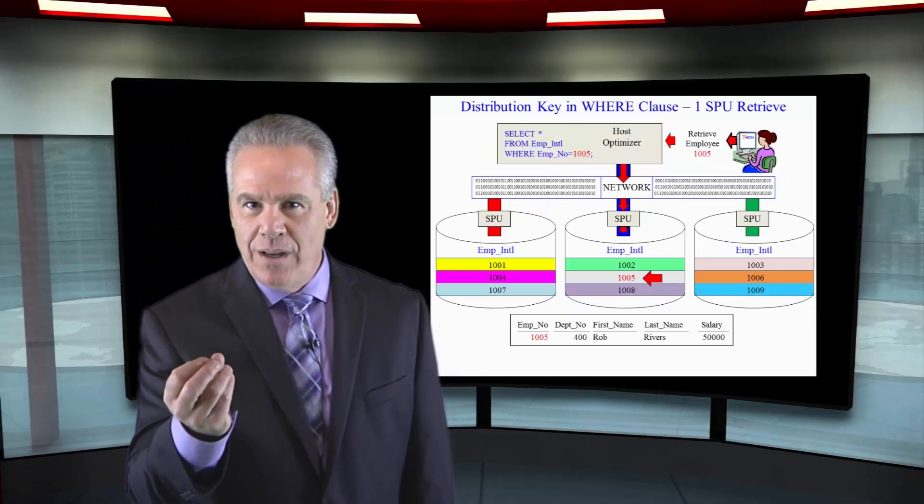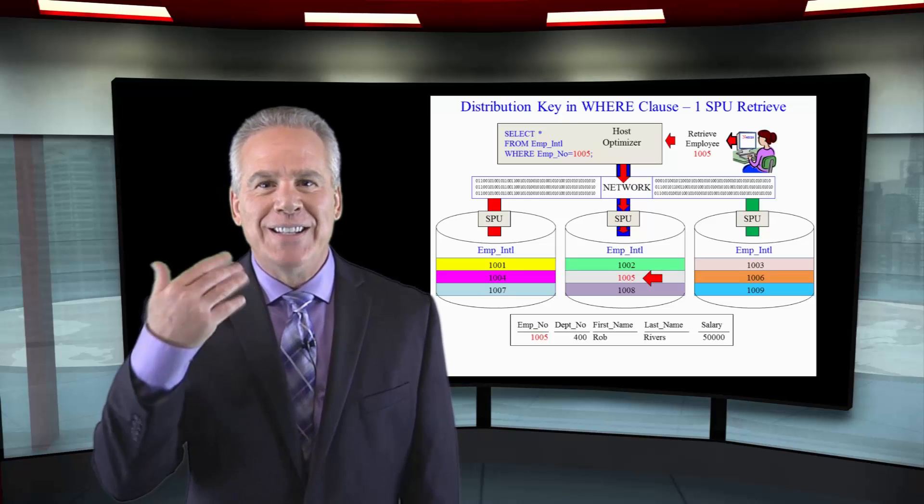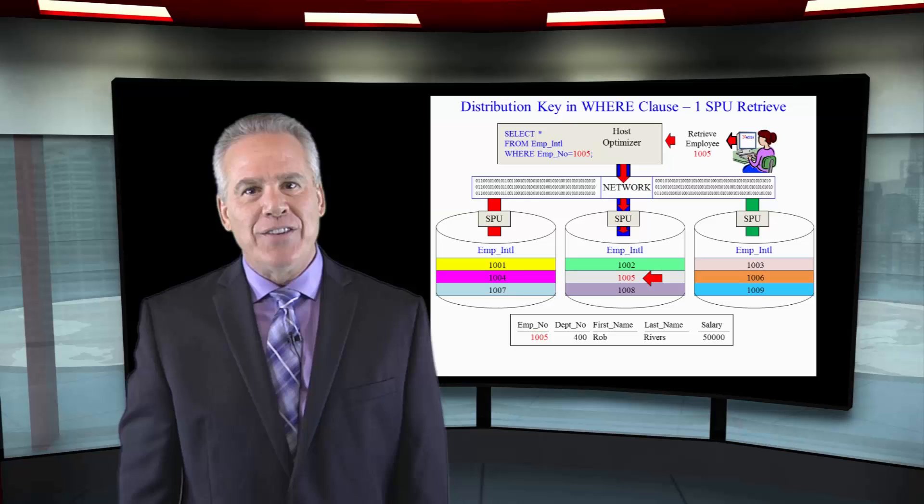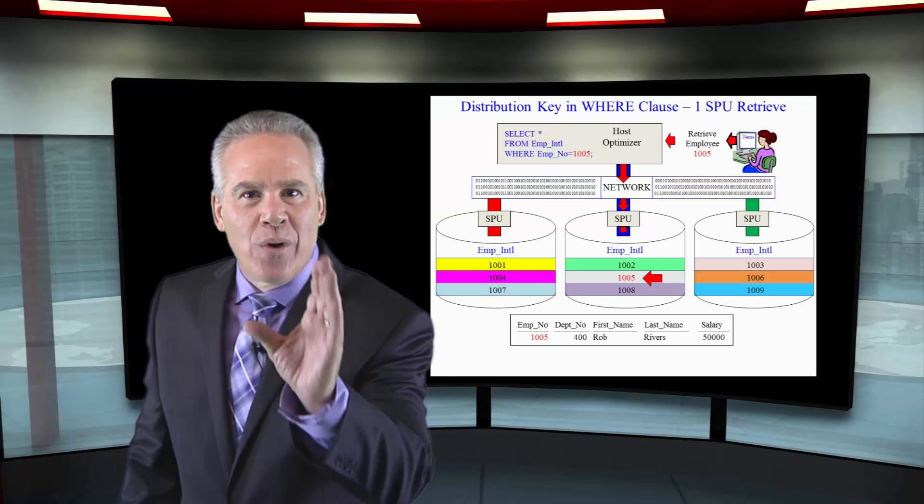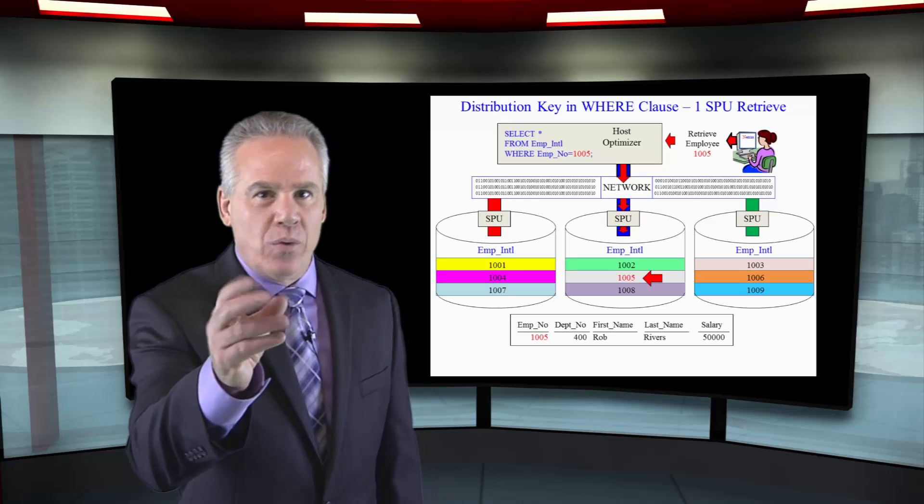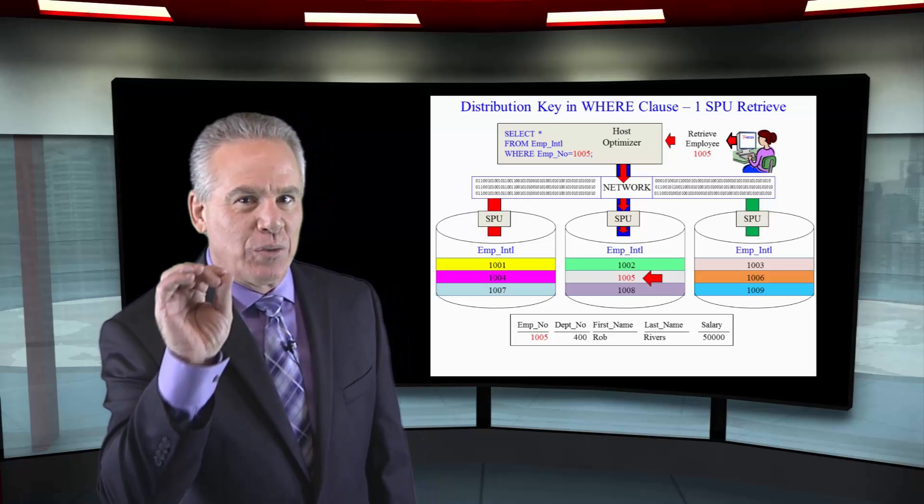When you query this table using the distribution key in the WHERE clause, well they know how they laid the data out. They know where that row is at, exactly which SPU. That's going to be a single SPU retrieve.